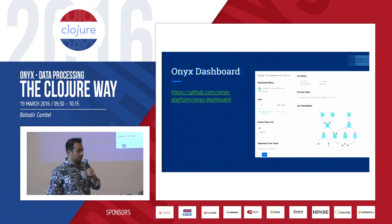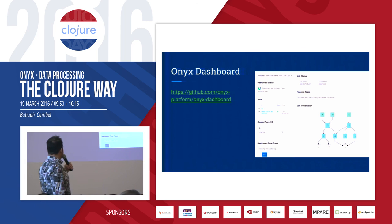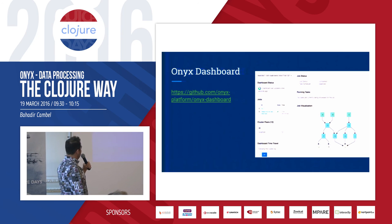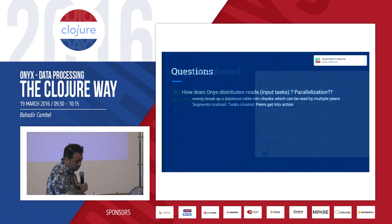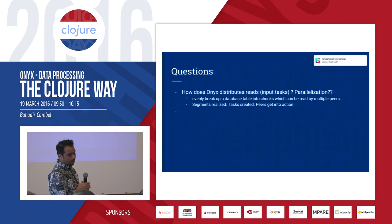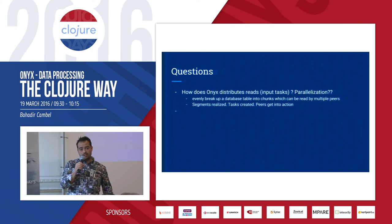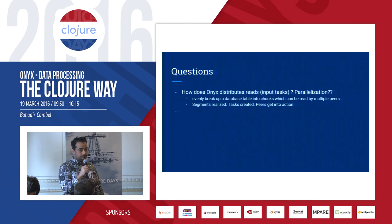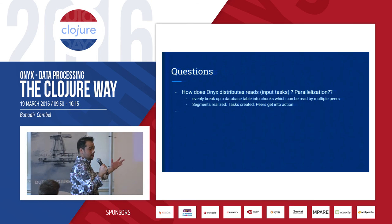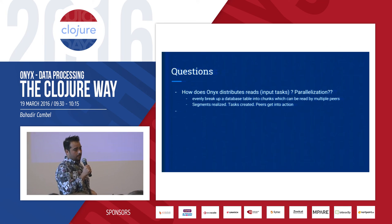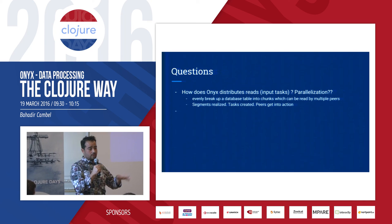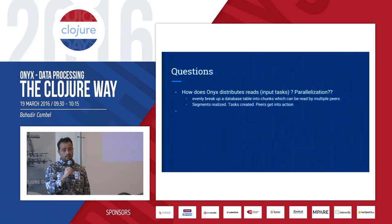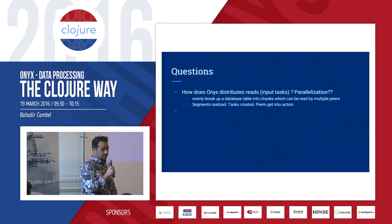Here is a screenshot from the Onyx dashboard. It nicely tells you the status, what the job is doing, and what visualizations you have. If you need to read a million database records, the Onyx SQL plugin lets you specify an integer key, distribute a partition of all the data to different peers, and do this operation in parallel.